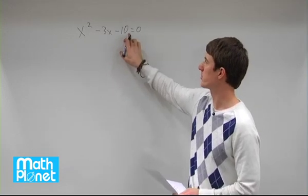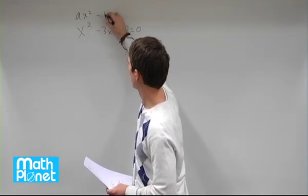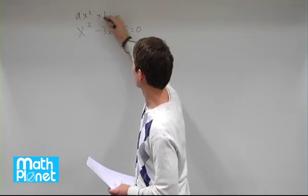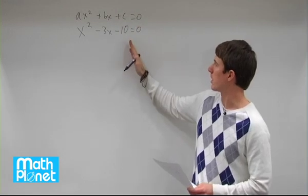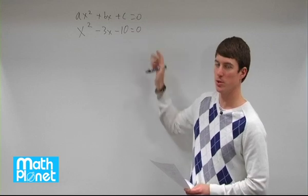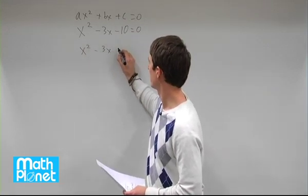Step number one, move this term. So we have this in the form ax squared plus bx plus c equals 0. The first thing we want to do is move the c term to the other side. So we have x squared minus 3x equals 10.